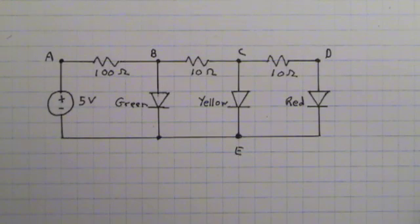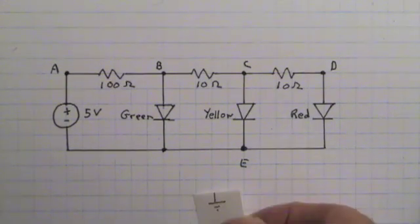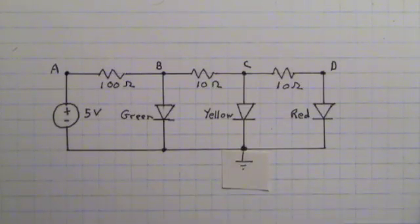Now a node voltage is the voltage at a particular node relative to a reference node. So we're going to have to choose one of these to be a reference node and we'll indicate that with the ground symbol. If I chose node E as the ground symbol, now we could speak of the voltage at node A relative to that ground reference point or V sub B, V sub C, V sub D. But there's nothing magical about that particular point E.